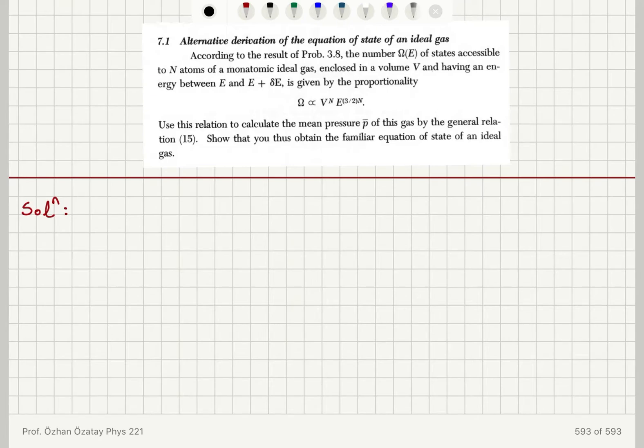the number of states accessible to N atoms of a monatomic ideal gas enclosed in a volume V and having an energy between E and E plus delta E is given by the proportionality: omega is proportional to V^N times E^(3N/2). Use this relation to calculate the mean pressure of this gas.